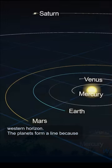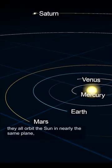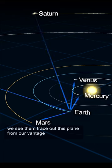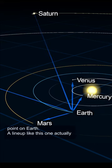The planets form a line because they all orbit the sun in nearly the same plane. We see them trace out this plane from our vantage point on Earth.